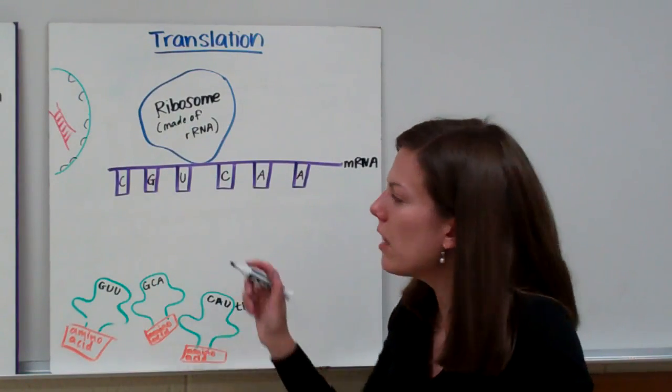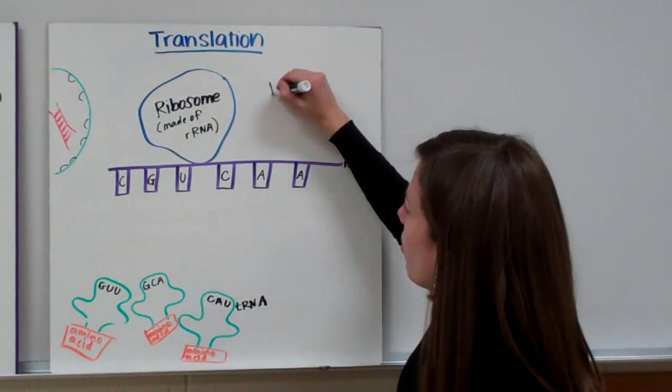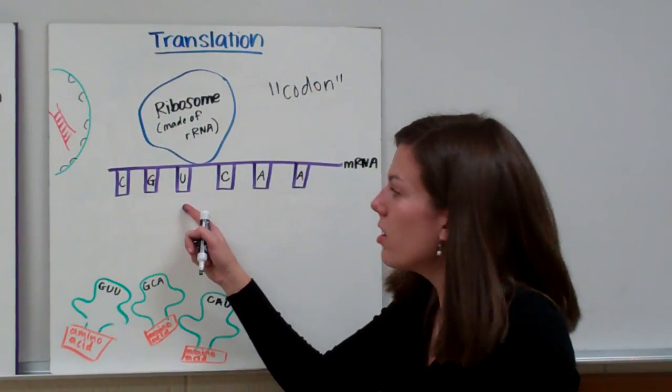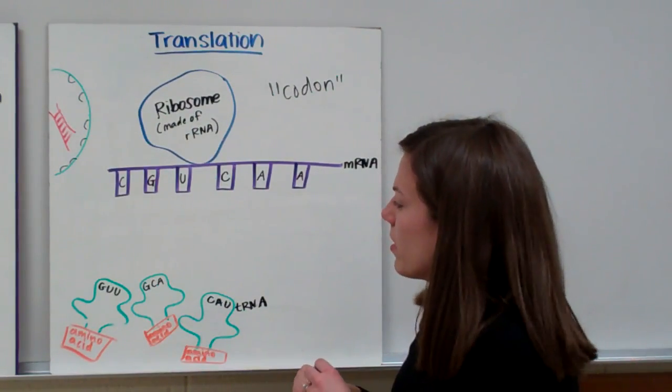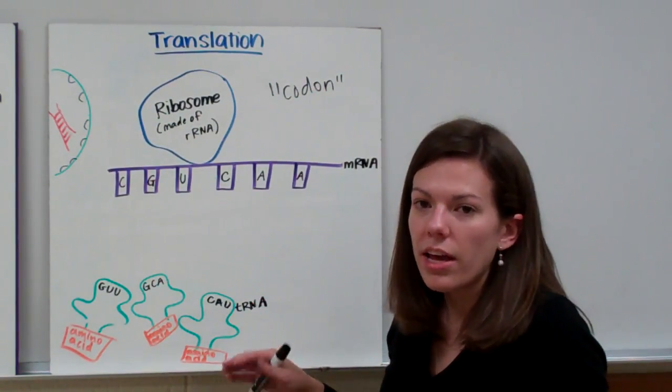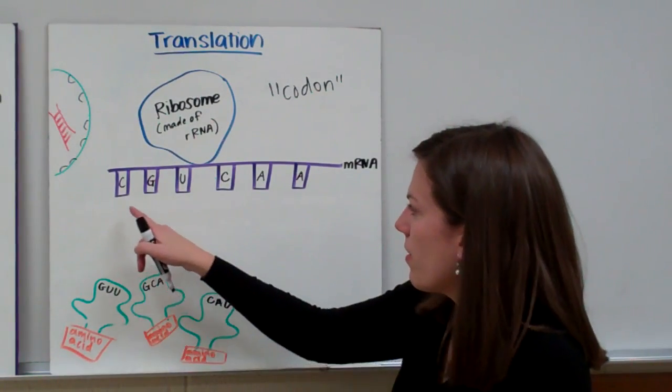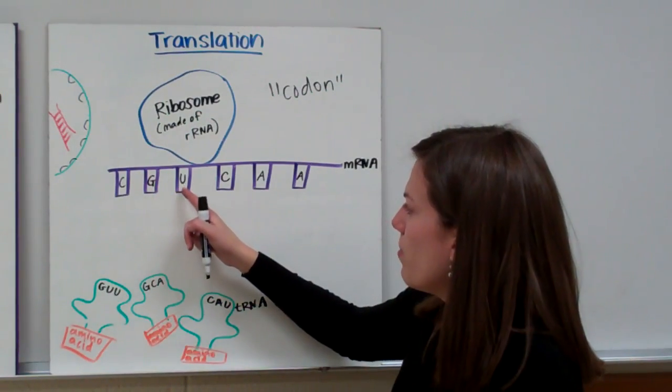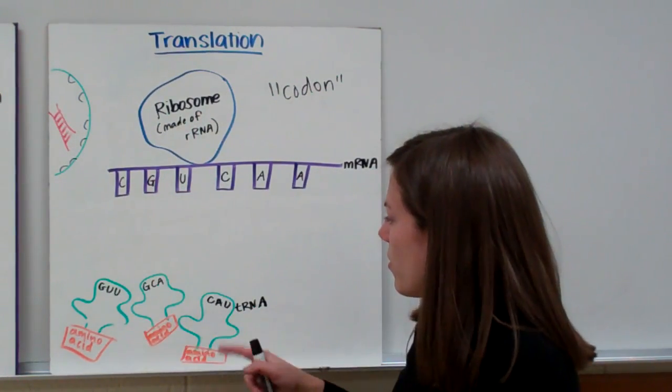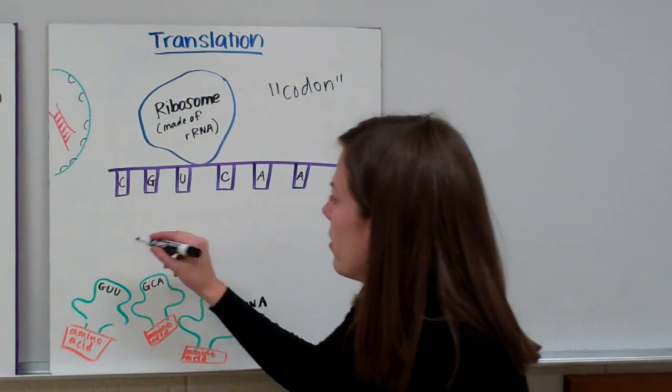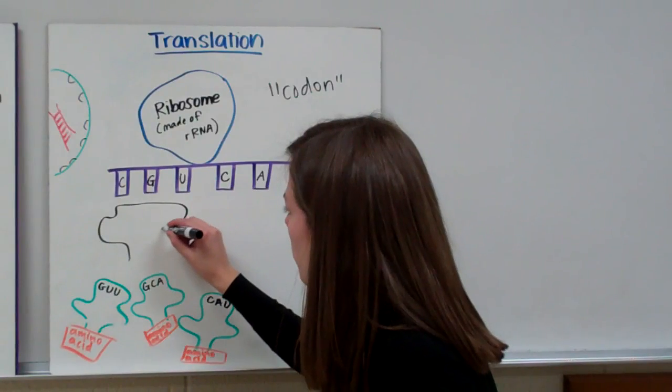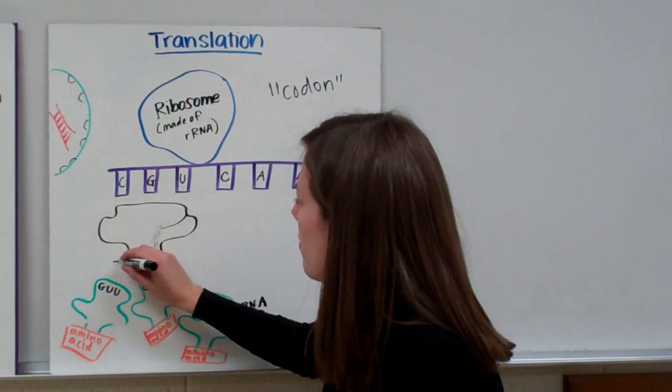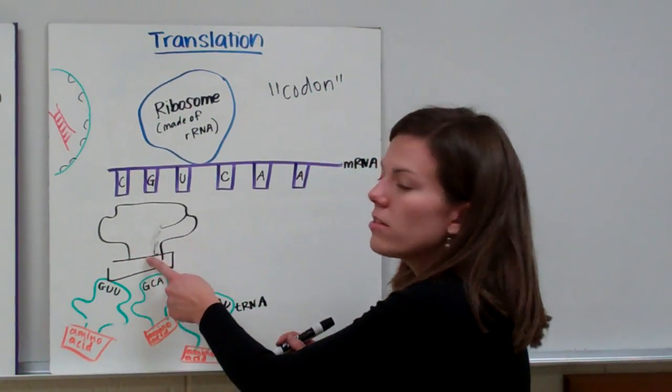We're going to take our tRNAs and attach them to our mRNA. Now it turns out every three letters on our mRNA is called a codon. CGU is a codon, and then we have CAA as a codon. The first thing we have to do is figure out which tRNA is going to match. So let's find the letters that match in tRNA. We have a CGU. C would match with G, G matches with C, and U matches with A. So we need a GCA. So that tRNA molecule would come attach to the mRNA molecule and deliver an amino acid.